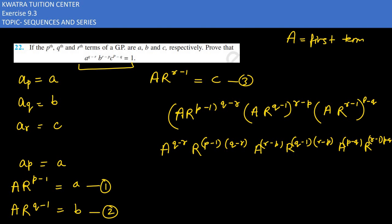If we note here, a to the power of all these exponents will be added: q minus r plus r minus p plus p minus q. The p cancels, q cancels, r cancels, so a to the power 0.